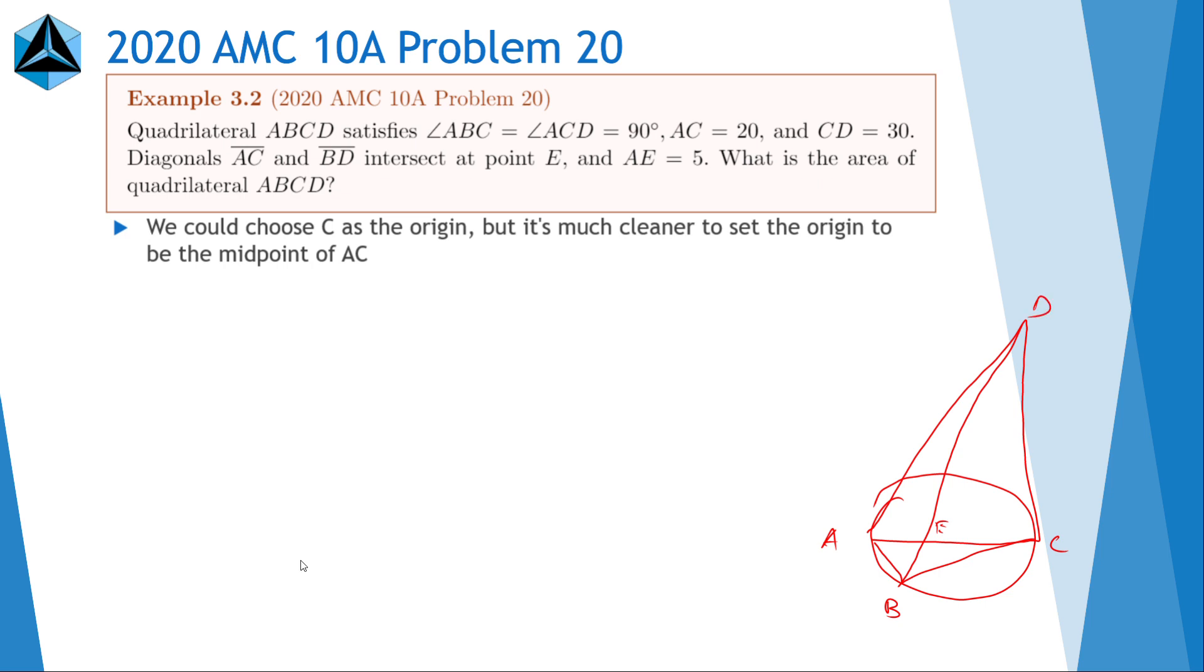So what we do is we set A is negative 10 comma 0. C is 10 comma 0. E is negative 5 comma 0. And since CD is 30 and AC is perpendicular to DC, then D is equal to 10 comma 30.